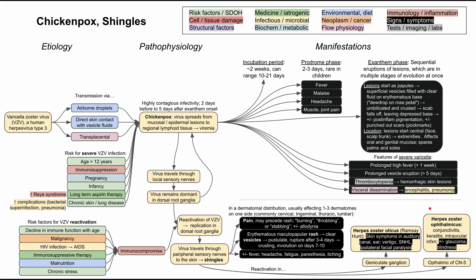This has been a mechanism of disease map for chickenpox and shingles. I hope it was helpful in seeing how the etiology of this one virus can progress to two distinct diseases, sometimes at different stages of life, and how they are connected. Thank you for listening.